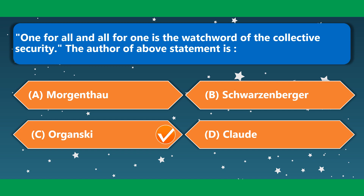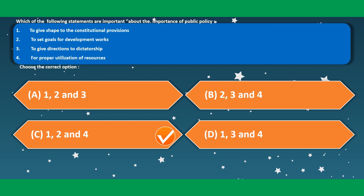'One for all and all for one' is the watchword of collective security. Which of the following statements are important about the importance of public policy? To give shape to constitutional provisions — correct. To set goals for development works — correct. For proper utilization of resources — correct. To give direction to dictatorship — not correct.